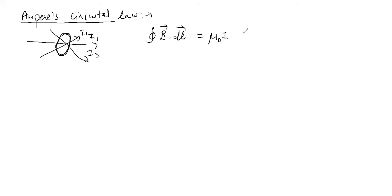From Ampere's Circuital Law we derived the differential form, where we said that del cross B is basically equal to mu naught times J.